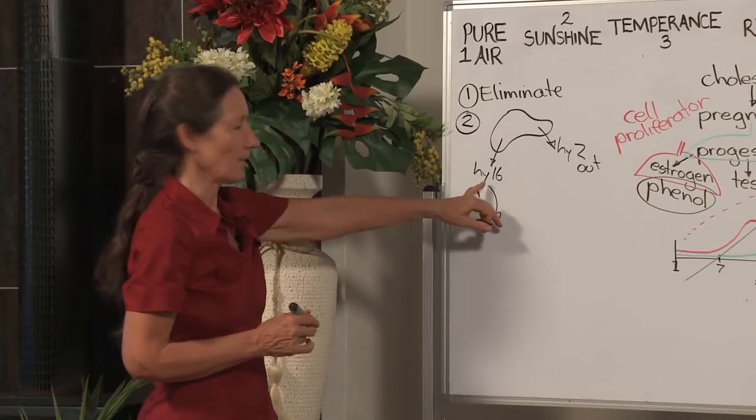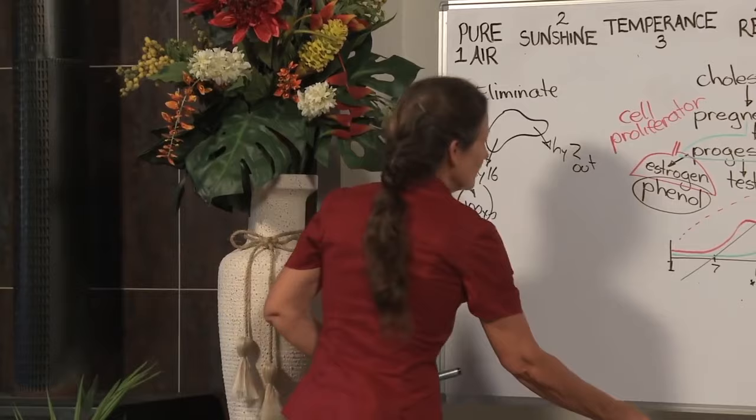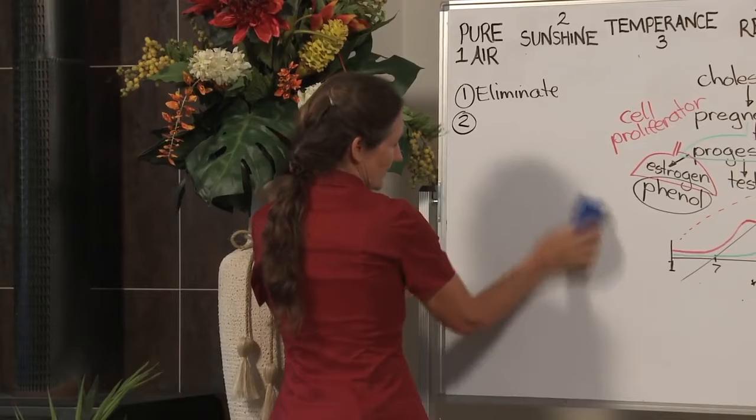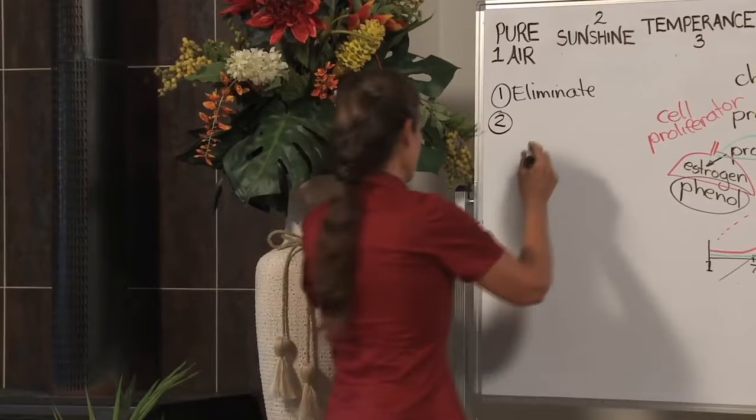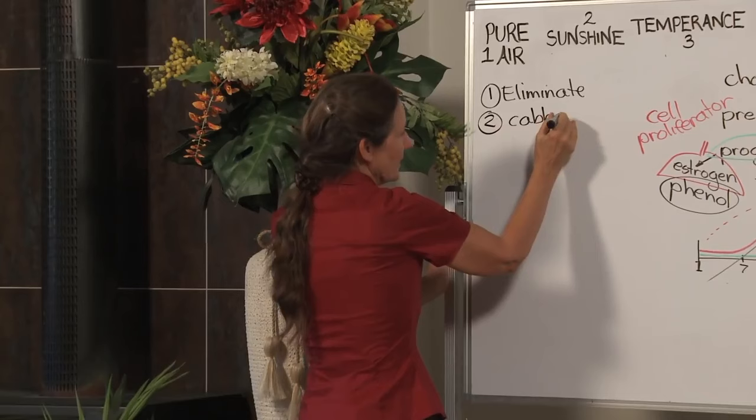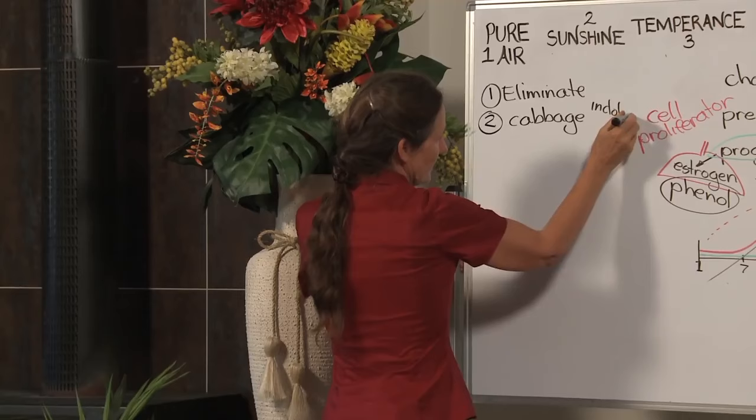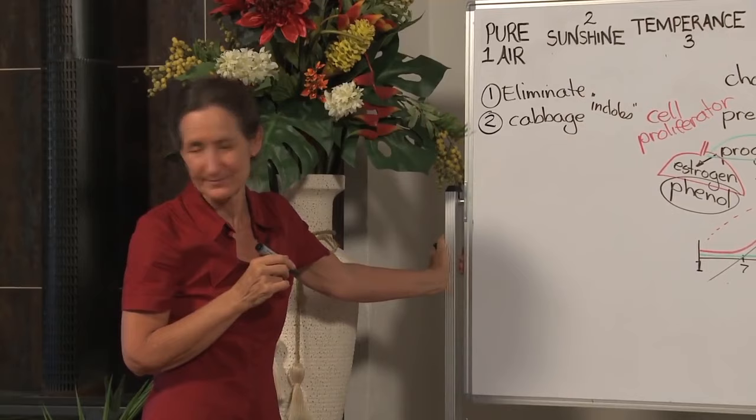We want this pathway. So what I'm going to do now is give you a list of foods, vitamins, herbs that encourage Highway 2 and discourage Highway 16. Cabbage family. The cabbage family contains indoles. These are a plant chemical that stimulate Highway 2 and discourage Highway 16.